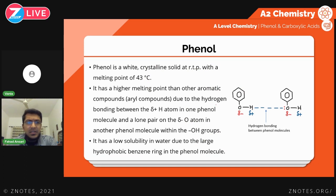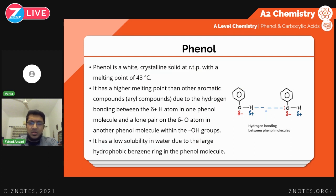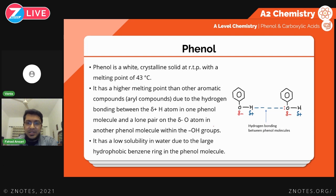A few physical properties: phenol is a white crystalline solid at room temperature and pressure, which is very much unlike other organic compounds — they normally tend to be liquids or gases. Phenol is a solid, and the reason is because of a special type of intermolecular force known as hydrogen bonding.